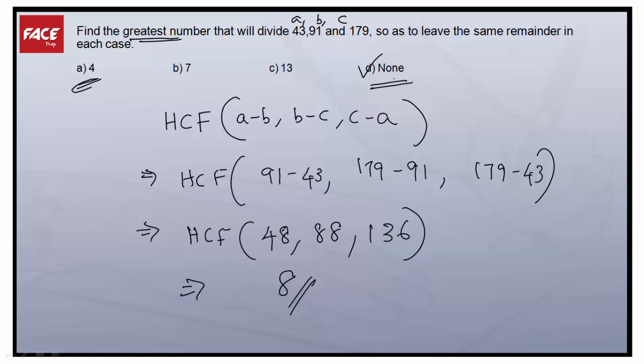8 is the greatest number that will divide 43, 91, and 179 to leave the same remainder in each case. 4 also does that, but 4 is not the greatest number, whereas 8 is the greatest number. So the answer for this question will be option D.